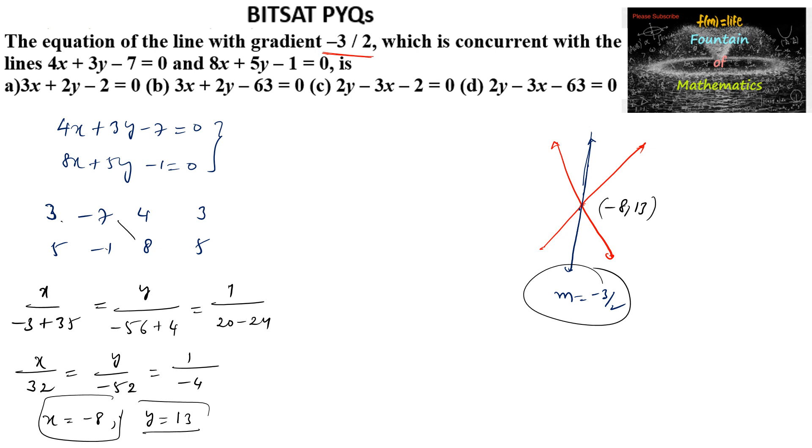So the required equation of the line can be taken as y minus y1 is equal to minus 3 by 2 into x minus of minus 8. So we can write 2y minus 26 is equal to minus 3x minus 24.